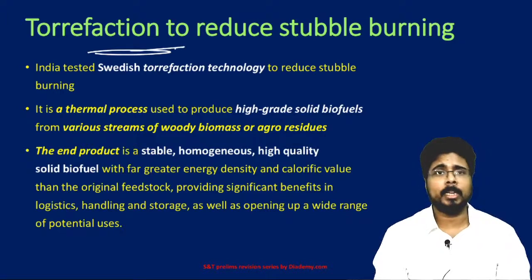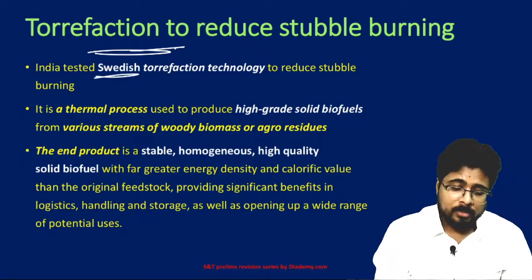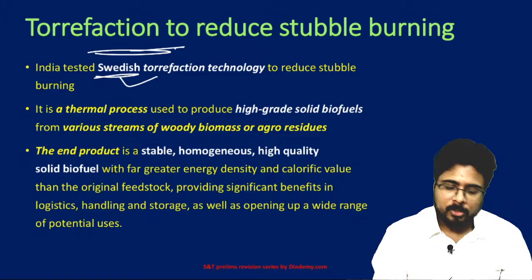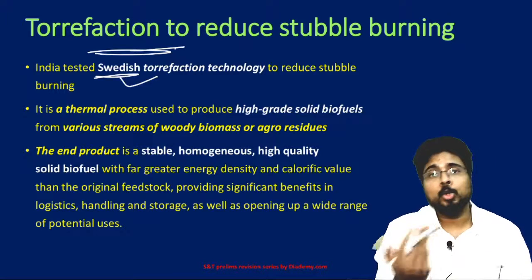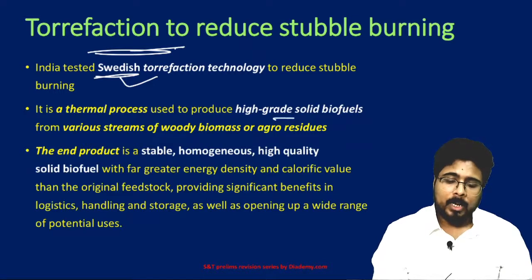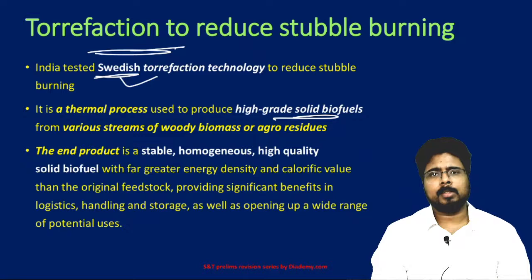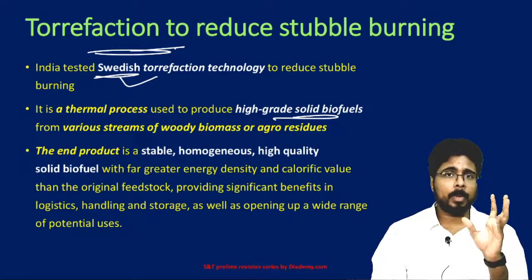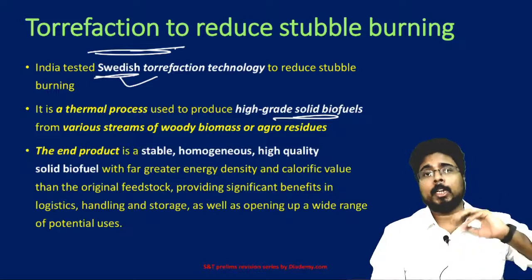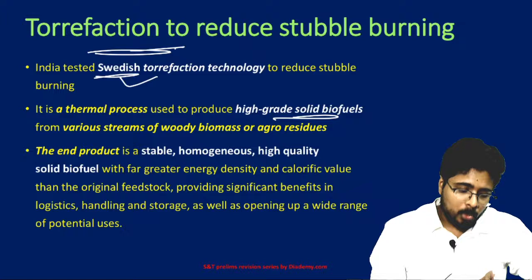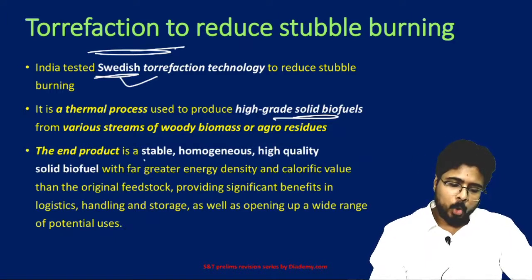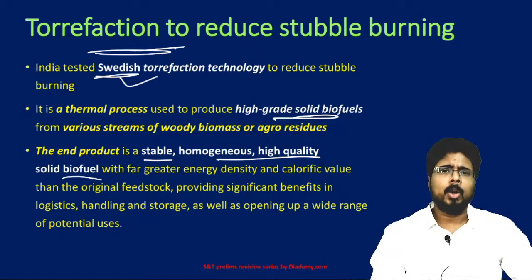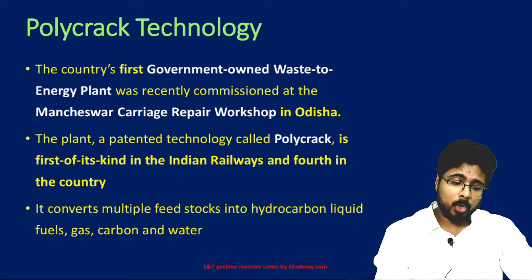Next, torrefaction — a technology to reduce stubble burning. We are importing this from a Swedish company; it is Swedish technology. This will convert the stubble which is being burned into a useful biomass and a high-grade biofuel. This is important because one reason for pollution in Delhi is stubble burning happening in Punjab and Haryana. The end product is a stable, homogeneous, high-quality solid biofuel with greater energy density and calorific value, which can be used in various industries.